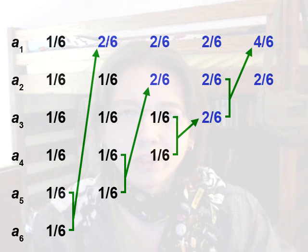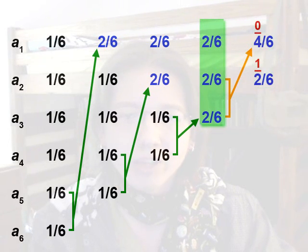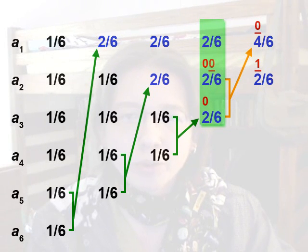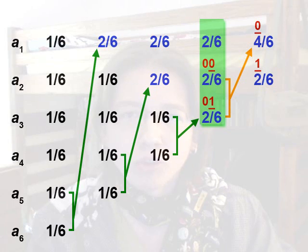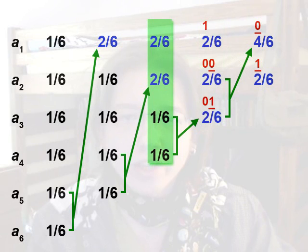Now we start assigning binary numbers to each symbol. For the final list with only two items, the first item is given the bit 0 and the second the bit 1. We follow 4 in 6 back to the two probabilities it came from — the bottom 2 in 6 and 2 in 6 — in the list to the immediate left. Since 4 in 6 was numbered 0, the numbers for these two will each start with 0, giving them 00 and 01. The number 1 for the other 2 in 6 from the last list is carried over, so it also has a number of 1.